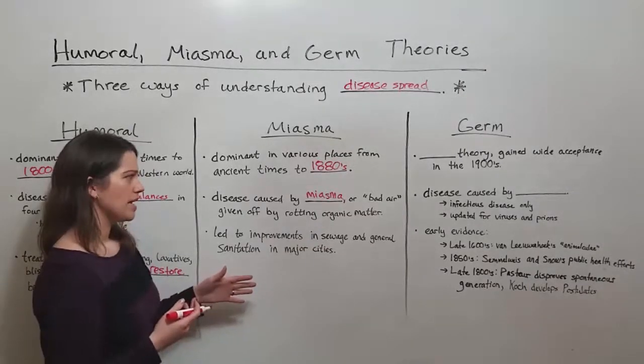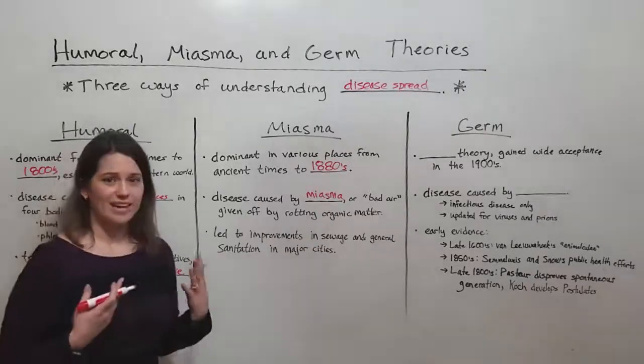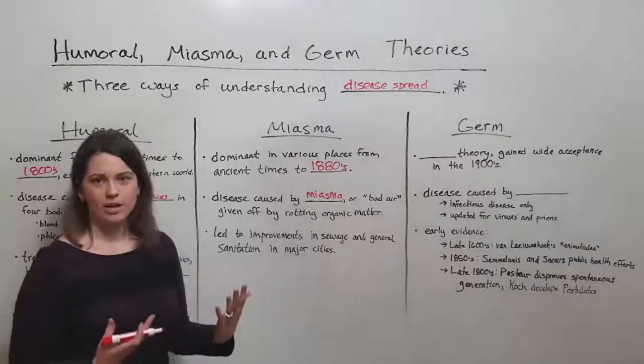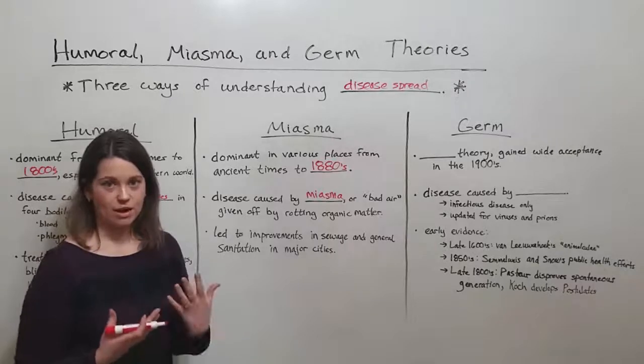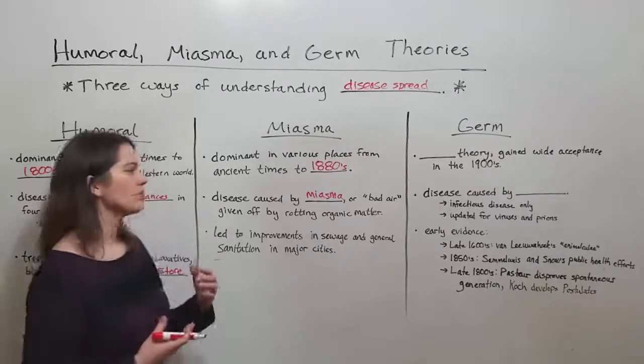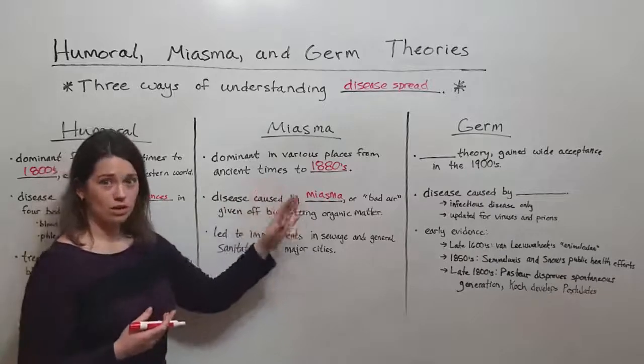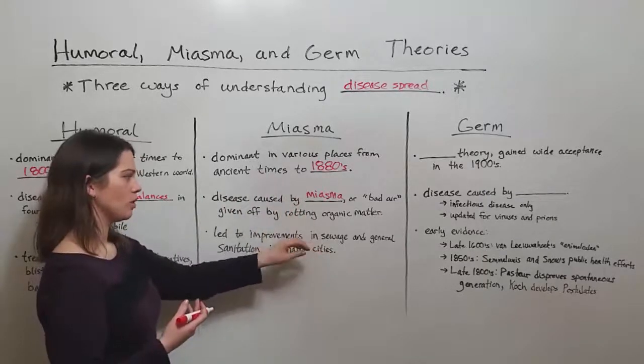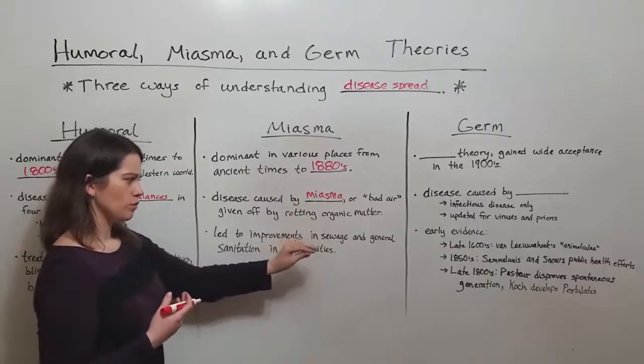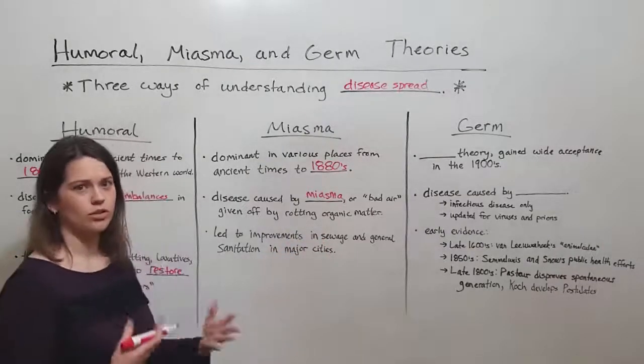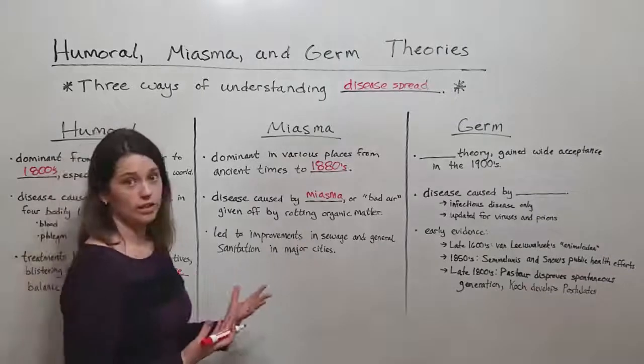For example, one year, what's called the Year of the Great Stink, London smelled so bad that Parliament couldn't even meet because the air just smelled too foul. And so because they also thought that that horrible smell caused disease, that led to a lot of sewage and sanitation improvements in cities, which was a really good thing.